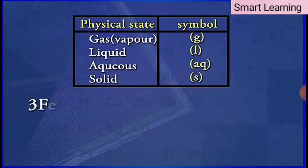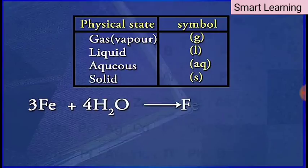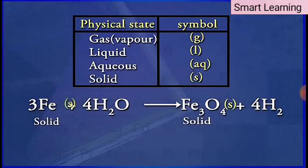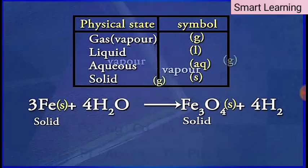This can be understood better with the help of an example. In the given equation, Fe and Fe3O4 exist in solid state, whereas H2O and H2 are in gaseous form.